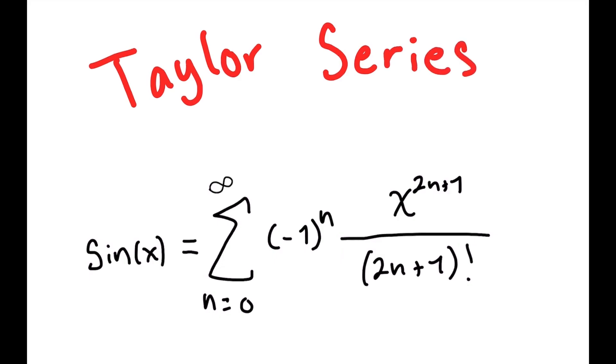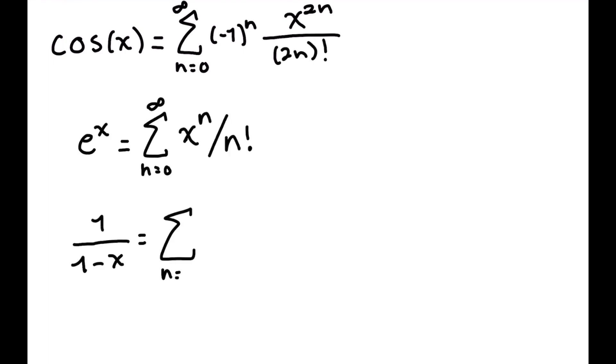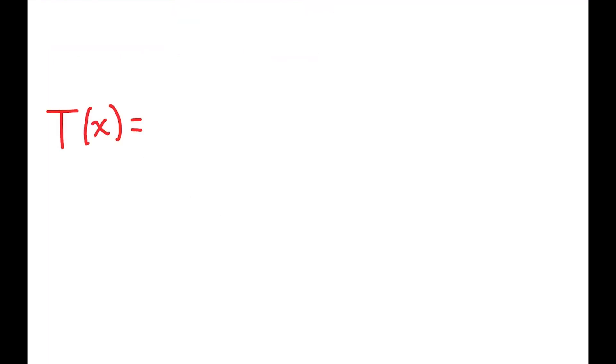We centered our approximator at c equals 0, which is why you don't see any other numbers, but if we wanted to center it at a different point, we would just shift it over to c, which is why we've got x minus c in parentheses over there. Here are some Taylor series for cosine of x, e of x, and 1 over 1 minus x. And here's the generic Taylor series formula, where you can plug in any function f and any center c.